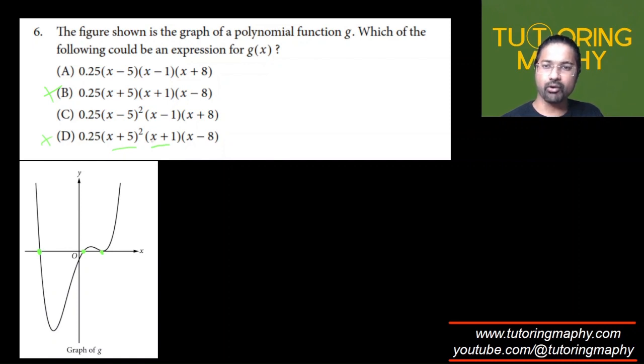So it has to be either A or C. Now the only difference between A and C is the multiplicity of x minus 5. In one of them the multiplicity is even, and in option C it's even and in option A it's odd.